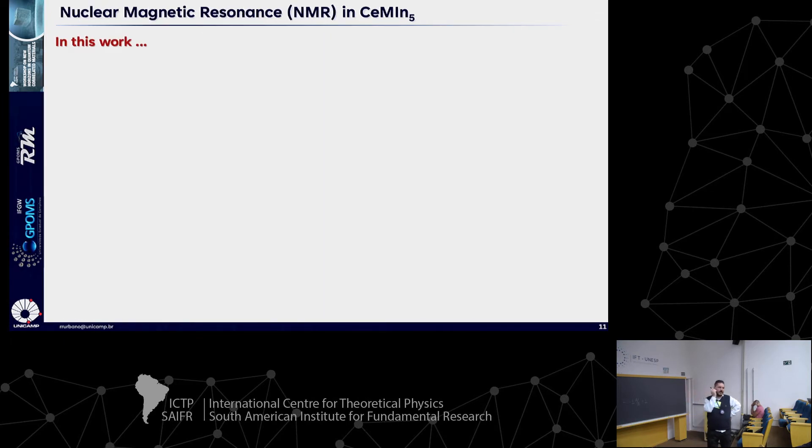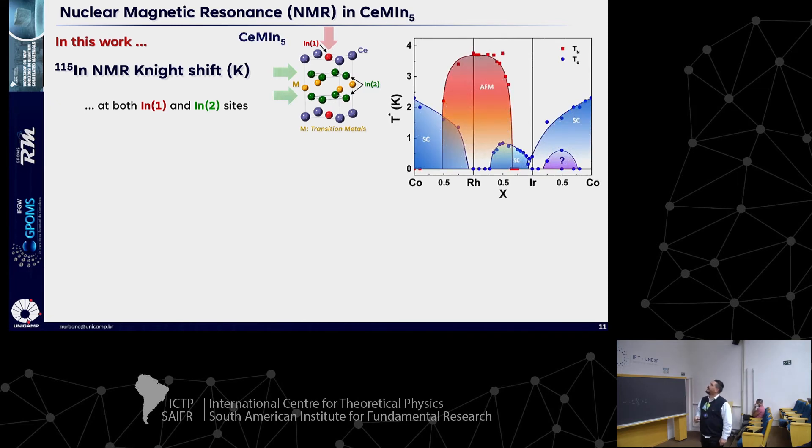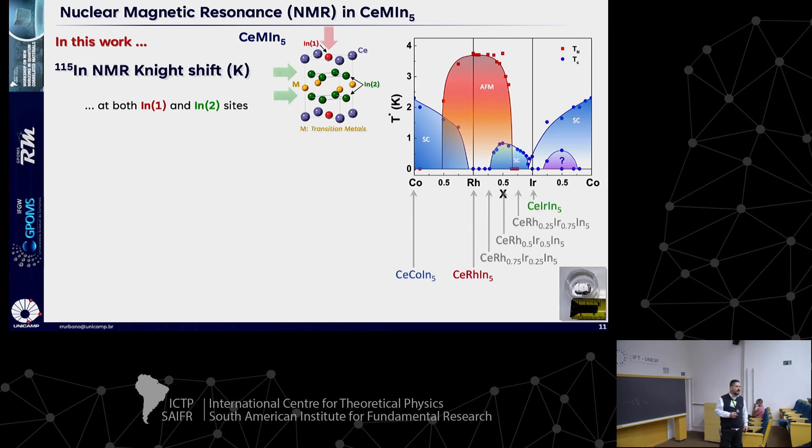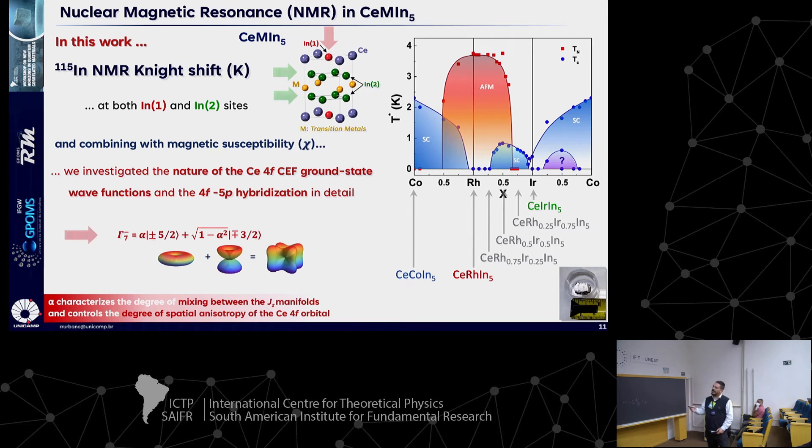From now on, I'm going to show you some NMR data in these materials. We measured NMR Knight shift at two different sites: Indium-1, that's the indium in-plane with cerium, and Indium-2 is the indium out of plane. For several samples crossing out this phase diagram, combining this result with magnetic susceptibility, I hope to convince you that we can probe the 4F ground state wave functions, the orbital anisotropy of that, and provide some 4F-5P hybridization in detail.